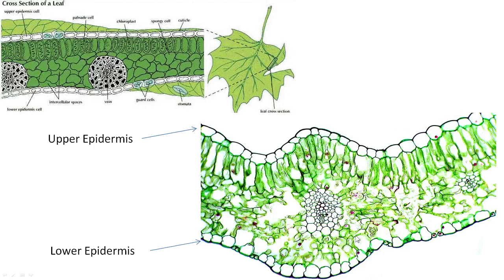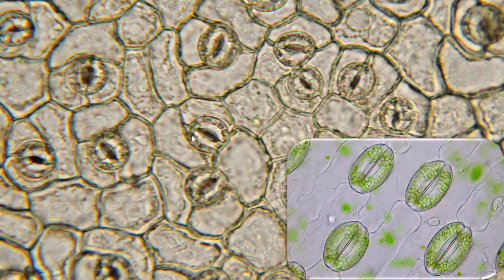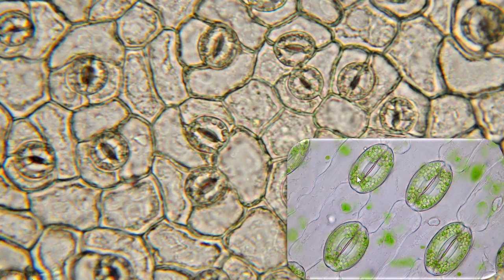Stomata have a contrast distribution. If you prepare a leaf mount of a plant to observe stomata, you should be able to see something like this. These are all stomata — stomata is plural. The guard cells visible in the cross section contain chloroplasts, since they are present on the surfaces of the epidermis of the leaves, and so they can also perform photosynthesis.